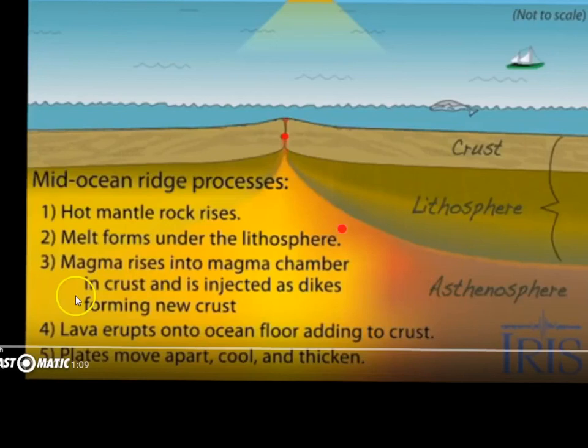Magma comes up and forms new crust as these oceanic and lithospheric plates move away from each other. The lava, which is magma that comes to the surface, erupts onto the ocean floor, adding to this new crust. Then the plates move apart, cool, and thicken.